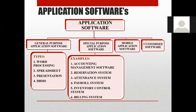There are many types of requirements and many types of application softwares available which suit individual user needs. Every one uses accordingly whichever software suits them. General purpose softwares can be divided into four major categories, though there are many more. These are: word processing software, spreadsheet software, presentation software, and DBMS software. Next are special purpose application softwares, mobile application softwares, and customized softwares. We will cover each one by one.